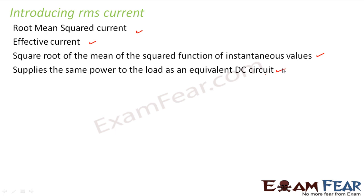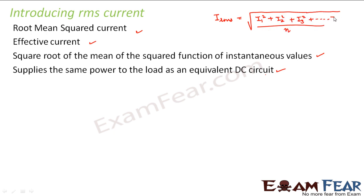So everything stands the same. RMS current is represented as I_RMS, and I_RMS is the square root of the mean of squared instantaneous values. For a discrete function, this is how we calculate the RMS value of current. Similarly, for a continuous function such as alternating current represented as I = I_M sin(ωt), I_RMS equals I_M divided by root 2.